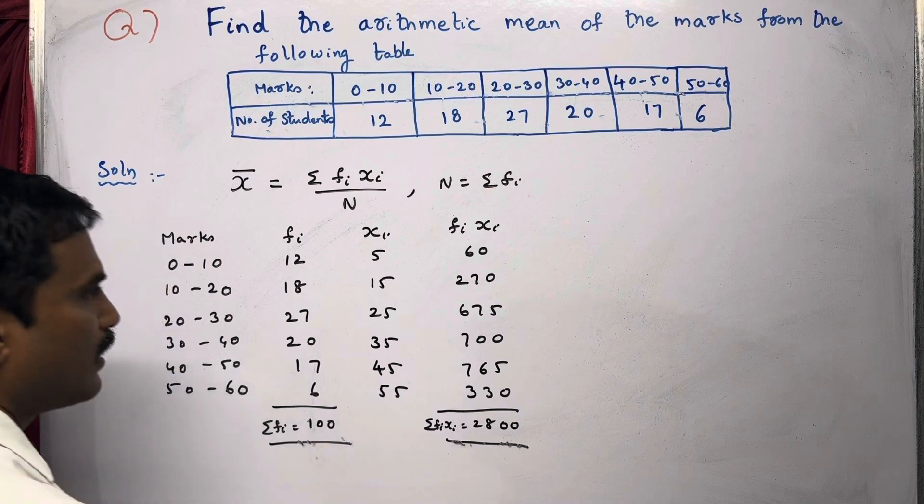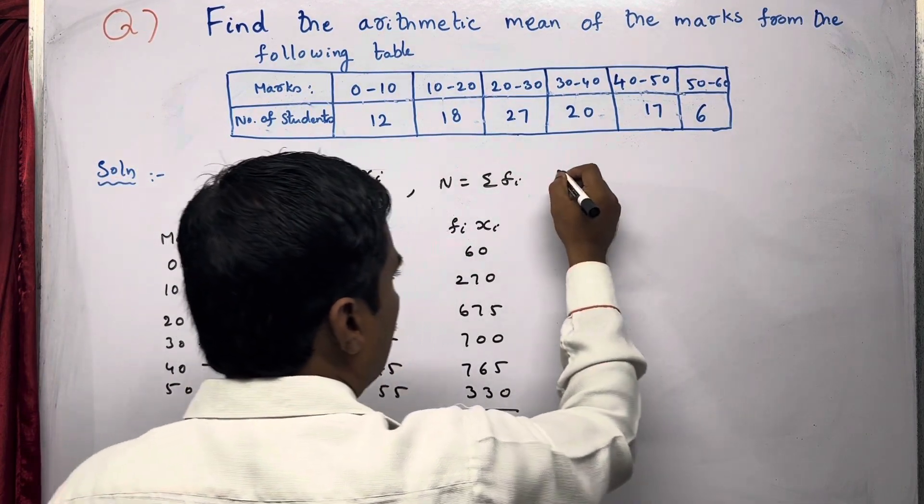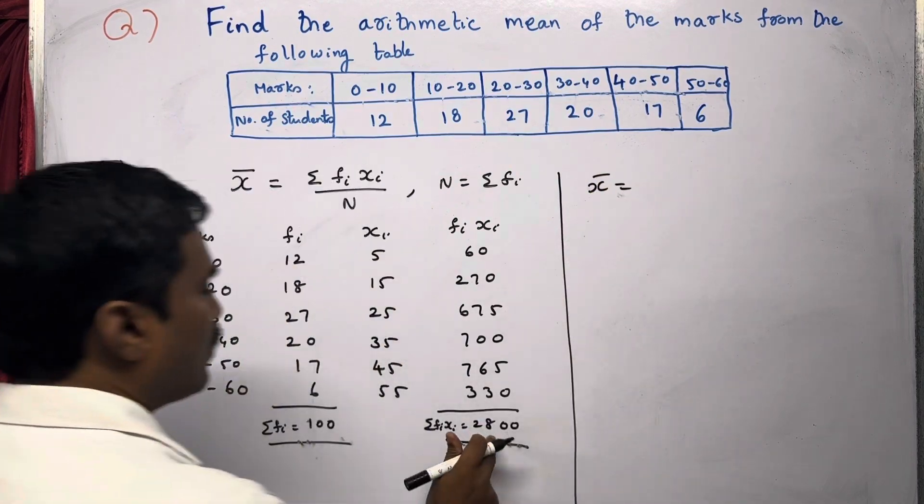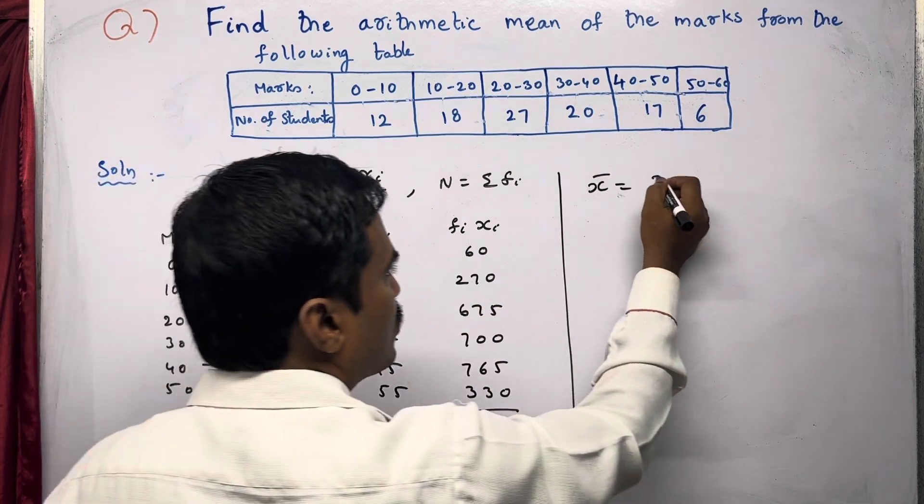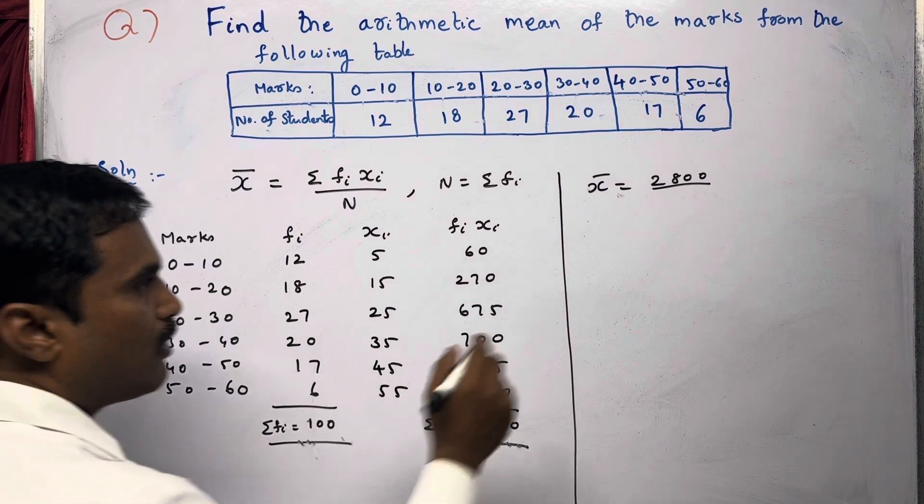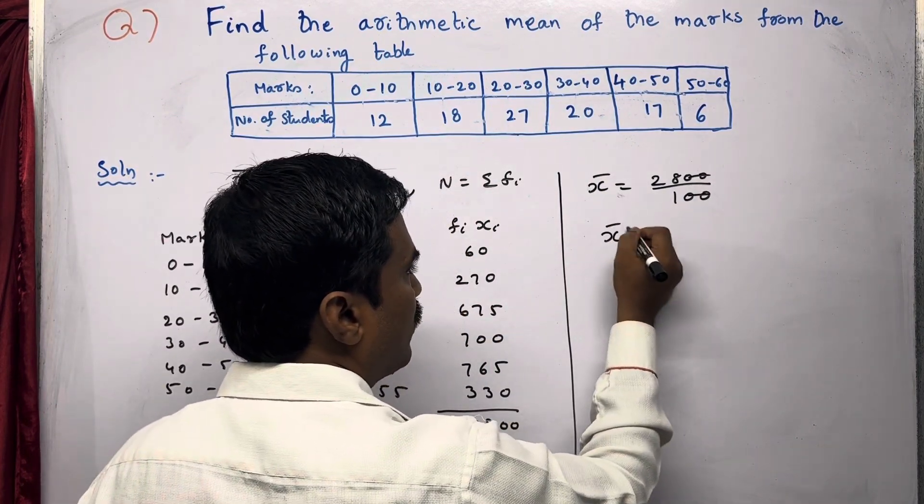Now apply the formula. X̄ = ΣFi × Xi / N. Substituting values: x̄ = 2800 / 100 = 28. So the arithmetic mean for this problem is 28.